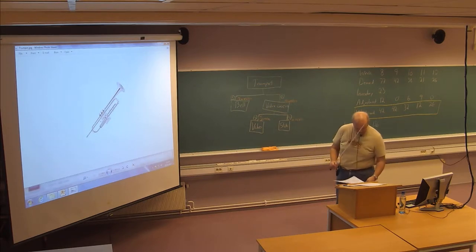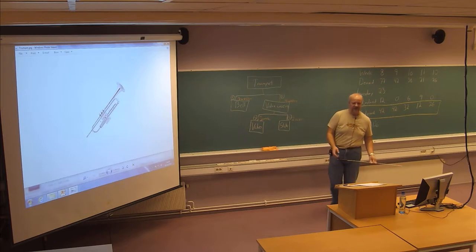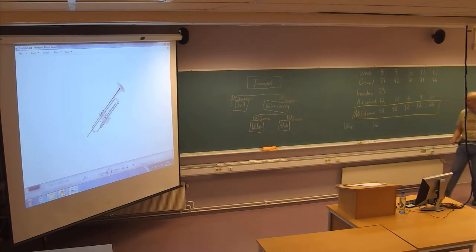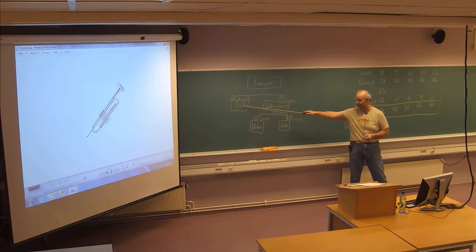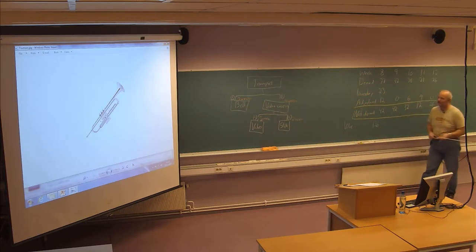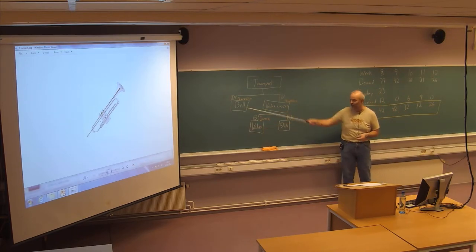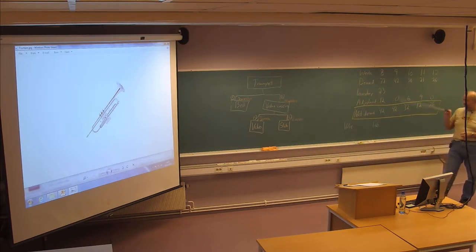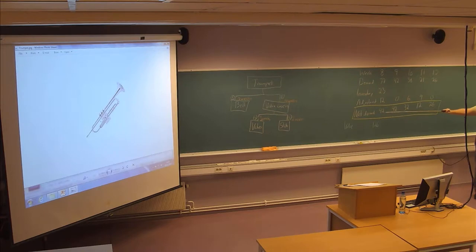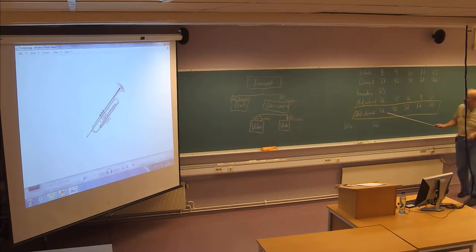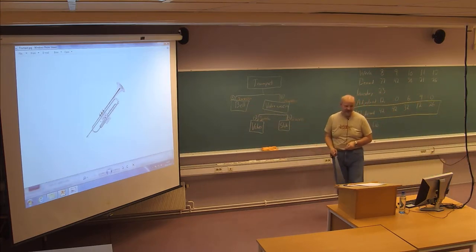We talked about the lot-for-lot strategy, which is to produce exactly what we need in each period. If we look at the bell, which is the simplest one — for valve casing we need valves, slides, and possibly other components — the time diagram is based on the bell assembly, which has the actual demand we've seen for the full trumpet. This is now the demand we need for the bell sub-assembly.